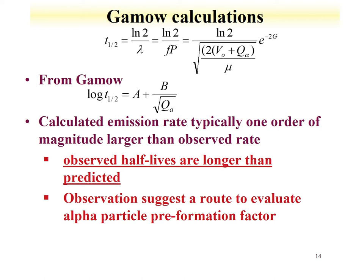The decay constant is just this frequency factor times the probability. We discuss the Gamow term — it's ln2 divided by this factor e^(-2G), where G is a Gamow factor. What this rearranges to is something very familiar: it shows the Geiger-Nuttall relationship, which Gamow also predicted. These factors are specific for a given nucleus. The log of the half-life equals two constants which can be used to evaluate terms of the nucleus related to the Coulomb barrier and the Q value.